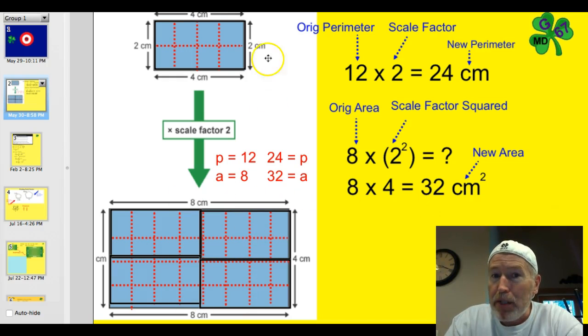So we wouldn't even need these measurements if we knew the perimeter and the area, or if we could determine the perimeter and area of the first rectangle and we knew what the scale factor was. We wouldn't even need to draw it. We could just say, the area is 32. It's got a perimeter of 24.